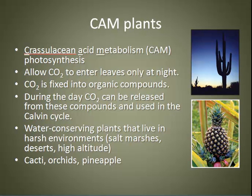In the desert, stomata are open only during the night. In the CAM pathway — Crassulacean Acid Metabolism — plants keep their stomata closed during the day. When CO₂ enters plant cells at night, it gets fixed into a variety of organic compounds. During the day, the CO₂ is released from these compounds and used in the Calvin cycle. Water-conserving plants in harsh environments like salt marshes, deserts, and high altitudes use this process — examples include cacti, orchids, and pineapples.